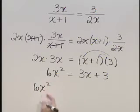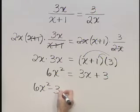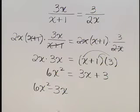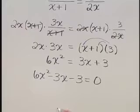Write this then as 6x squared. Let's subtract 3x from both sides giving minus 3x on the left as well. Set equal to 0.